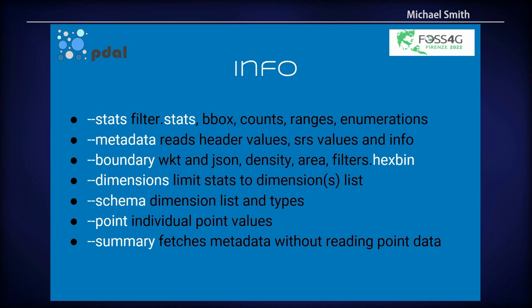The main thing you'll use to get information about your point clouds is Poodle info. There are numerous options to do this, and all of these are available as filters as well. There's a stats filter that will give you stats information and different ranges, metadata to read your basic metadata, projection information, header values. There's the hex bin filter, which you can get through the boundary option, that will give you a very nice form-fitting boundary for your point cloud data. You also get limits to dimensions, schema output, individual point fetches, and general summary information without hitting the point data — useful for large data sets like EPT.